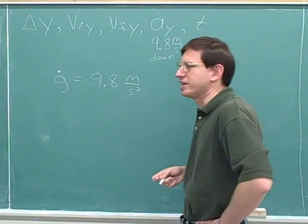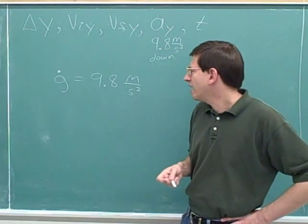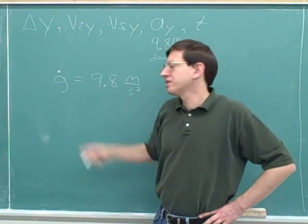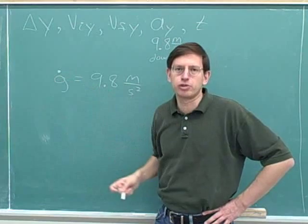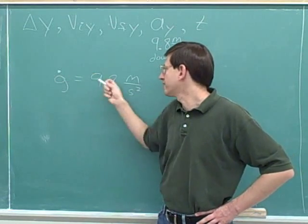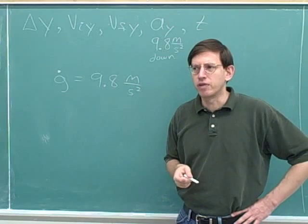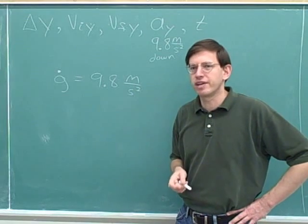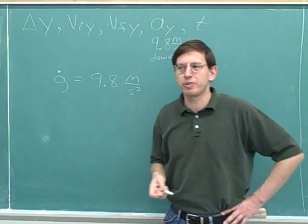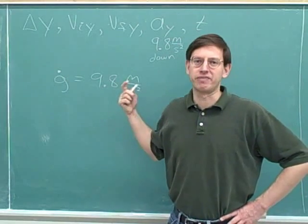Let me discuss a bad habit that a lot of people have. How do a lot of people read this symbol? A lot of people read this just as gravity. A lot of people say, oh, gravity is 9.8 meters per second squared — that's a very common and really a very bad habit. When you see the symbol g, you should not pronounce that as gravity.